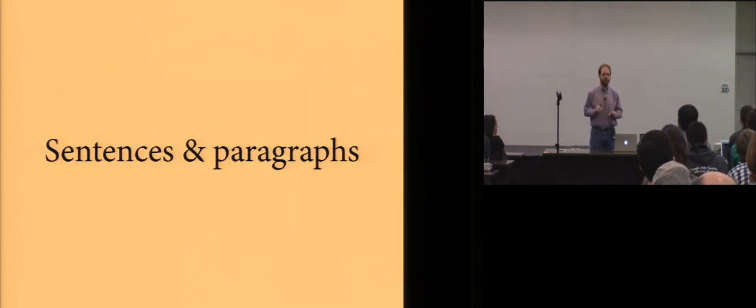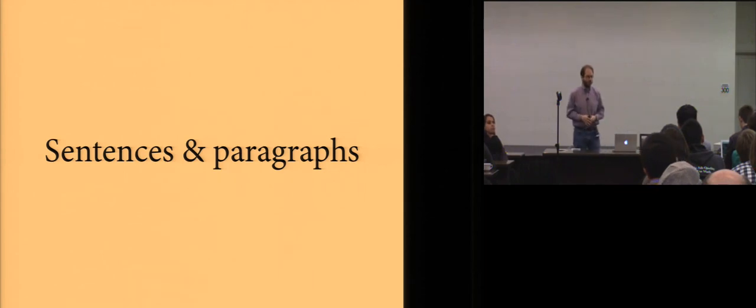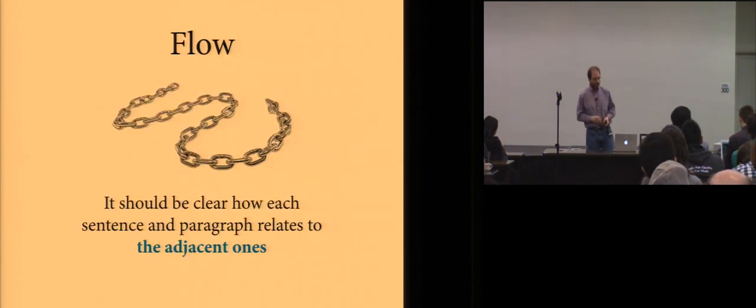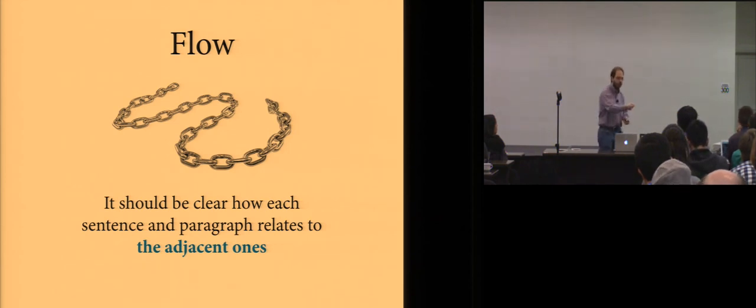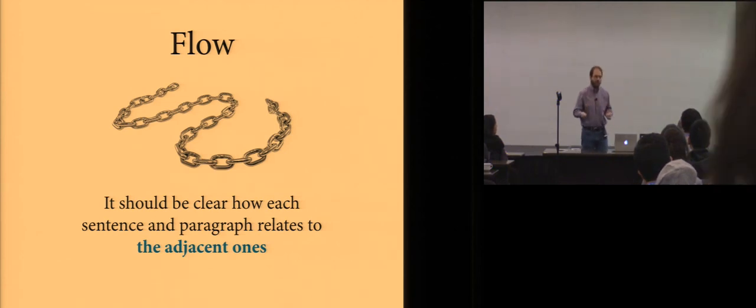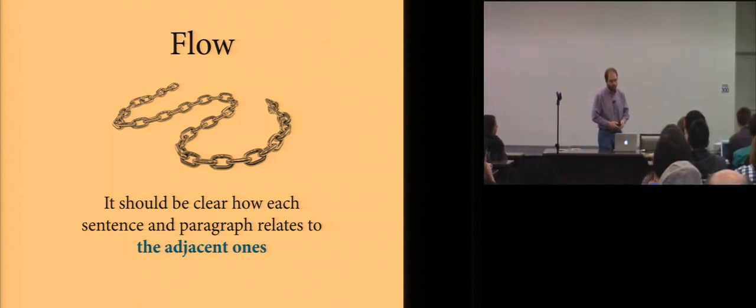Okay, so let's get to it. So I'm going to split the talk into two parts. The first part I'm going to cover more low-level issues of sentence and paragraph construction. And then in the last part, I'll talk about the higher-level question of how do you structure a paper. And the foremost problem that I see in technical writing is problems with flow. So the idea with flow is, it should be clear how every sentence and paragraph in your paper relates to the adjacent ones.